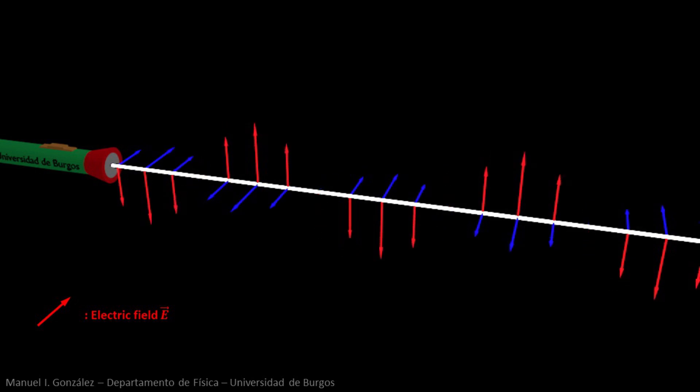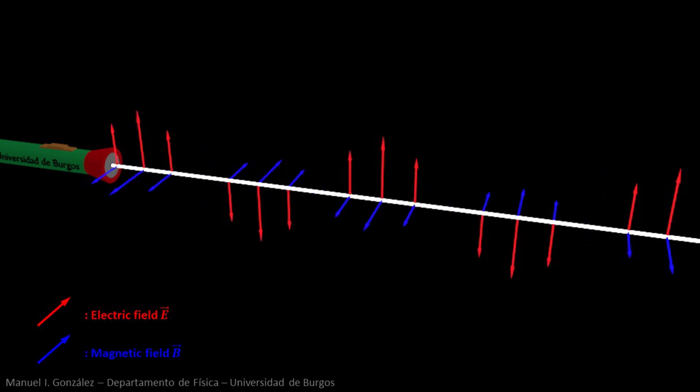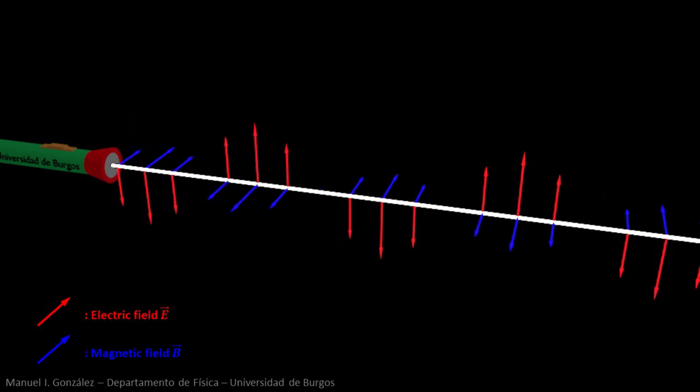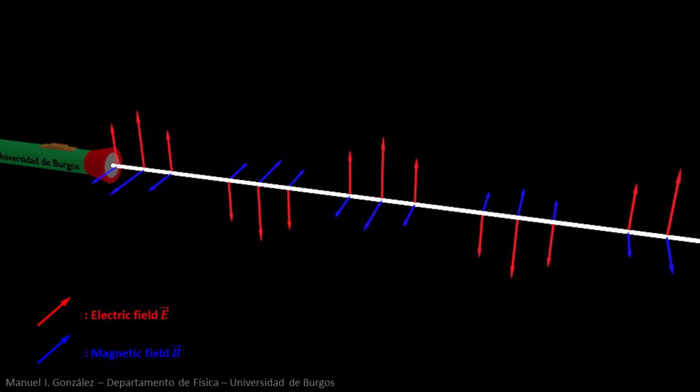Second, there is also an oscillating magnetic field. Its plane of oscillation is perpendicular to the light beam and to the electric field.